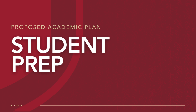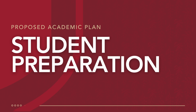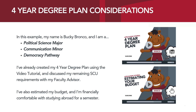We're going to give you a Bucky Bronco example, but first we're going to discuss what student preparation goes into this process before you can start your Proposed Academic Plan. In this example, my name is Bucky Bronco and I'm a Political Science major with a Communication minor and a Democracy Pathway. I've already created my four-year degree plan using the video tutorial and discussed my remaining SCU requirements with my faculty advisor. I've also estimated my budget and I'm financially comfortable with studying abroad for a semester.